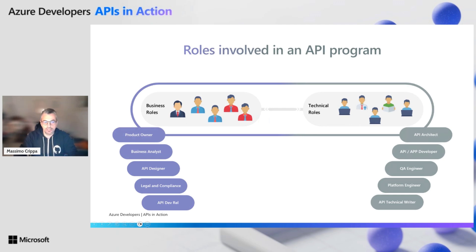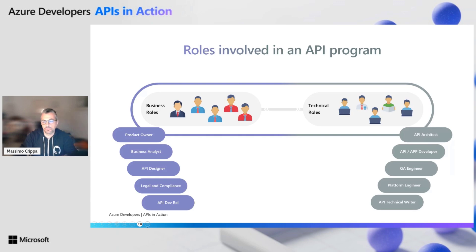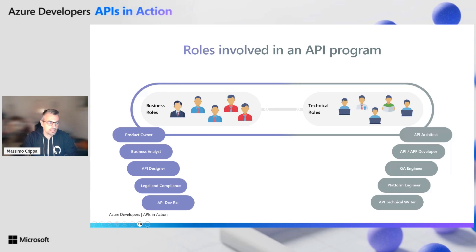As you can see here, this is an example. A product owner is necessary to be involved, as is a business analyst. On the other hand, you need an API architect, developers from an API point of view but also from an app perspective, the one dedicated to BFF, and others on the backend. So a lot of roles might be necessary to be successful in an API program.